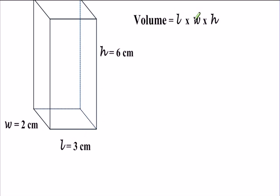The width, which is represented by w, would be 2 centimeters. And lastly, our height, represented by h, will be 6 centimeters. So, by simply plugging it into the formula, we get 3 centimeters times 2 centimeters times 6 centimeters.